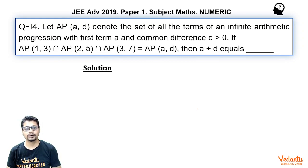Let AP denote the set of all the terms of an infinite arithmetic progression with the first term A and common difference D which is positive. If AP(1,3) intersection AP(2,5) intersection AP(3,7) is equal to AP(A,D) then A plus D equals.